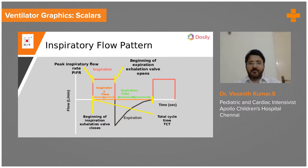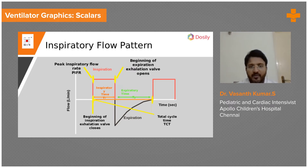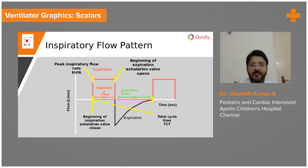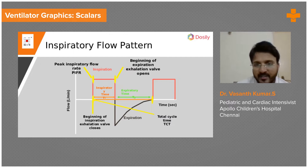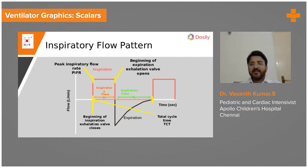Again, negative deflection confirms this is a flow-time scalar with constant flow — volume control mode. This is inspiration and this is expiration. The flow first increases and reaches a maximum, which is called peak inspiratory flow. Once the inspiratory time is over, it goes into expiration. The maximum point during expiration is called peak expiratory flow. Once expiratory time is over, the cycle is completed and the next breath starts.